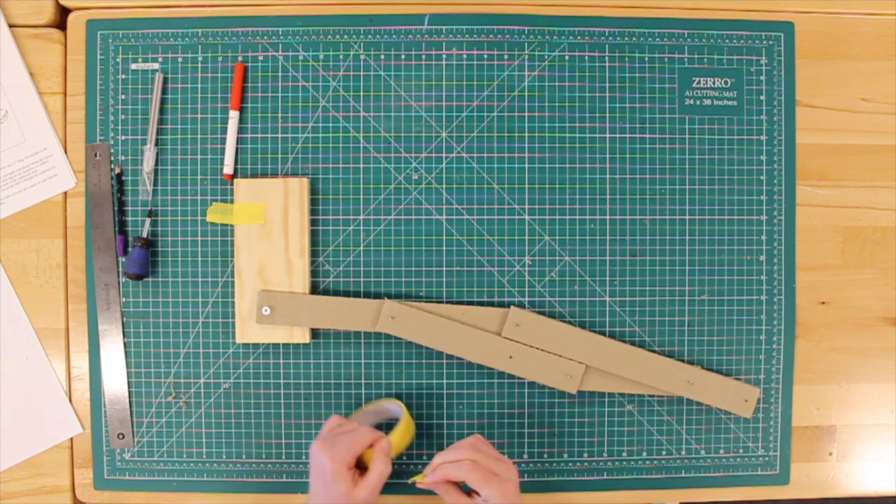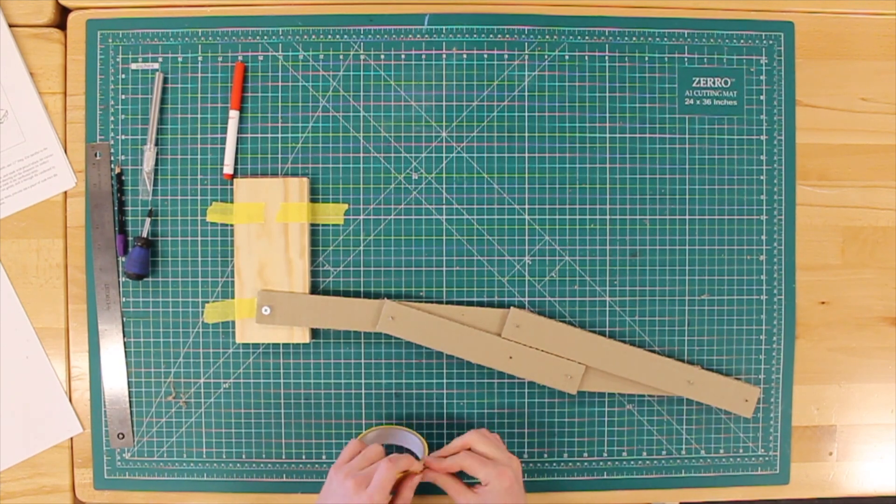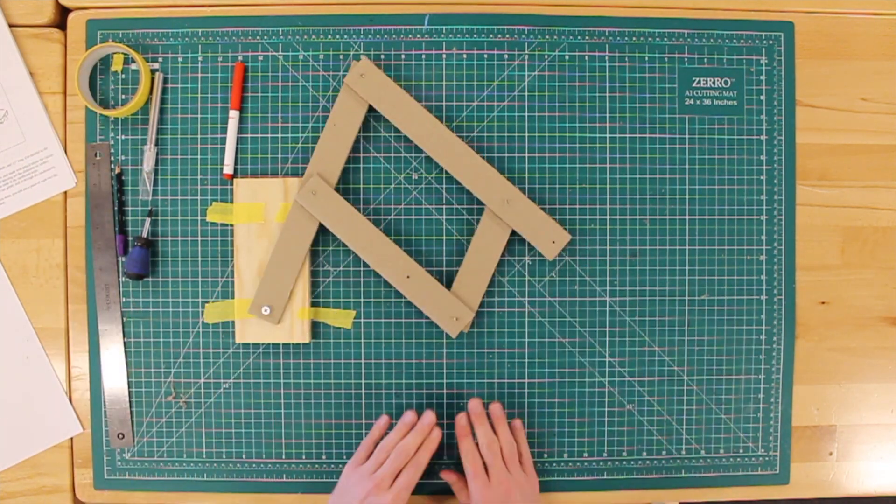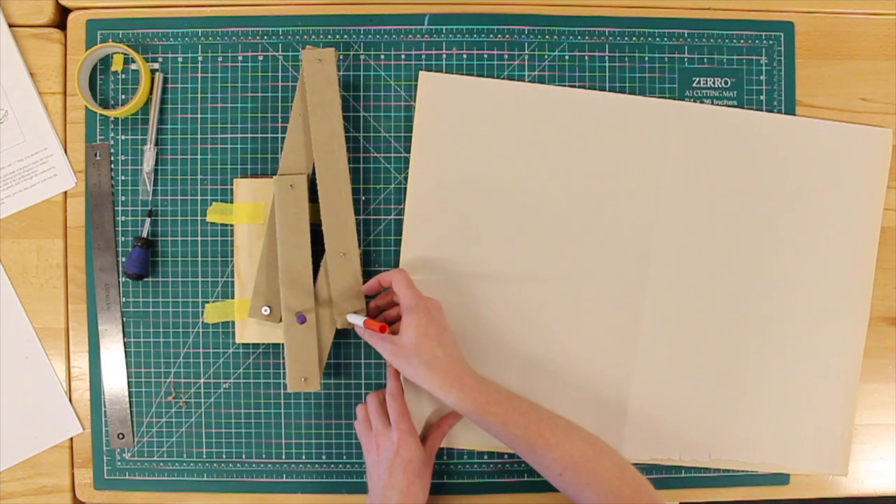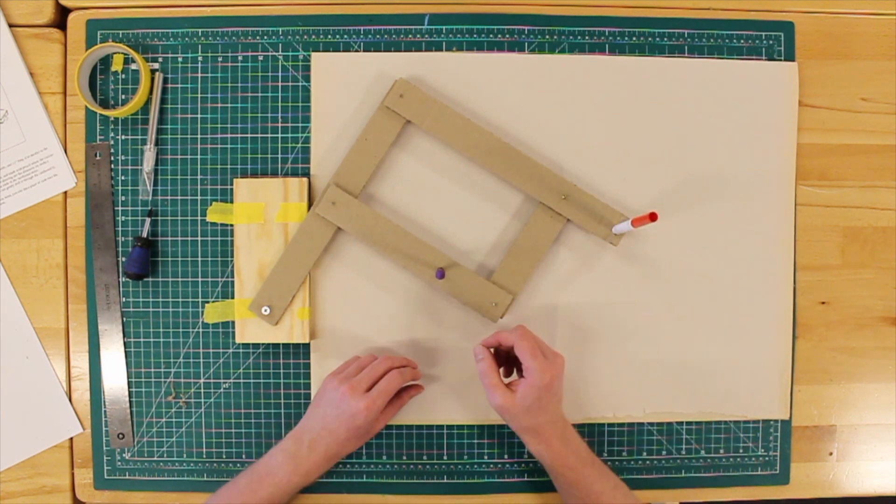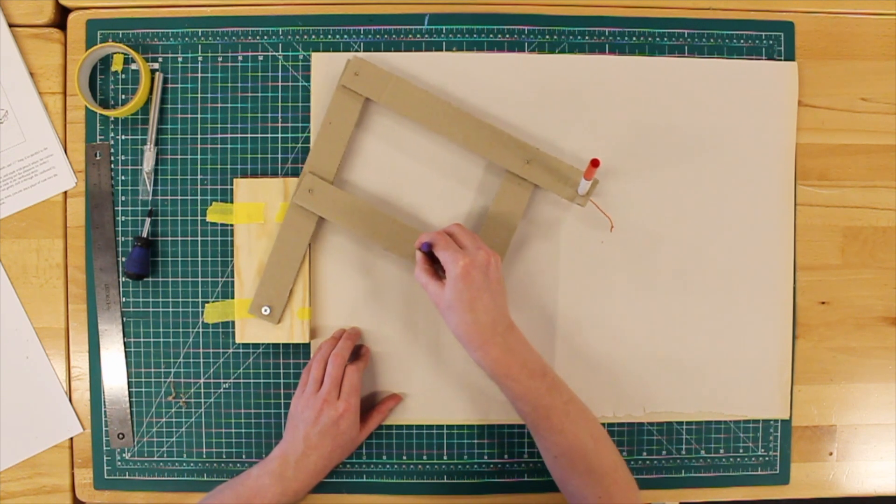Now tape the block down to the table. With the two remaining holes, place your markers. You may need to open the holes up a little wider depending on the diameter of your marker. And now we have our pantograph.